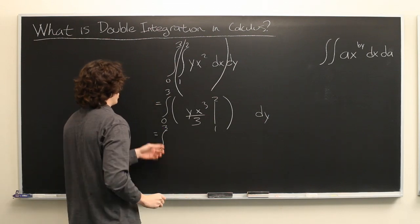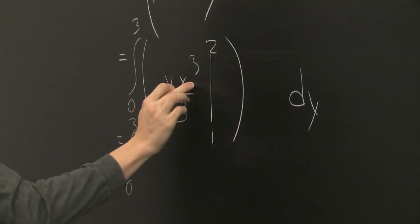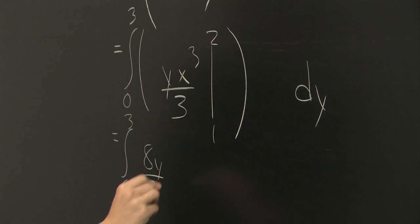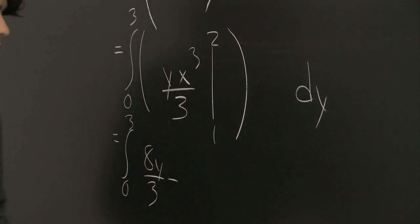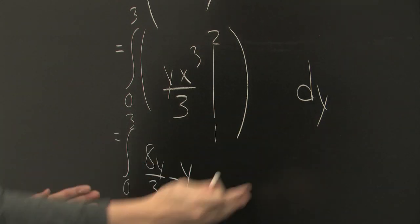Again, integral from zero to three. And we get two cubed is eight. So we get 8y over three minus one cubed is one. We get y over three. Bring down the dy.